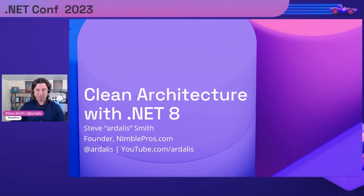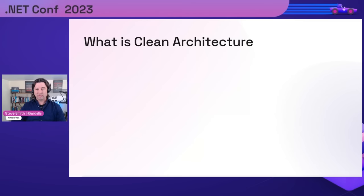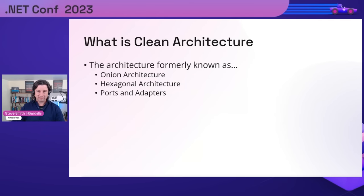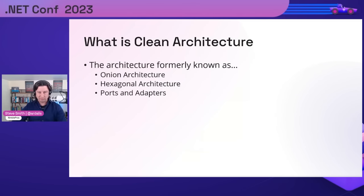Let's get going. I want to show some code, so first let's talk about what clean architecture is. You'll find various definitions — there's a whole book on the topic. It's very closely related to onion architecture, hexagonal architecture, or ports and adapters. Ports and adapters probably has the clearest name. Hexagonal is a fun one because it's named that because somebody drew a hexagon in their architectural diagrams — whatever shape you draw, that's what your architecture will be known as.